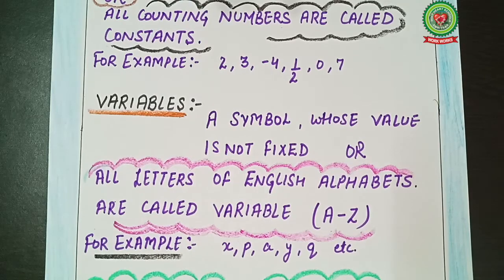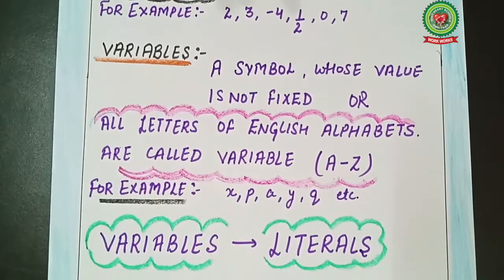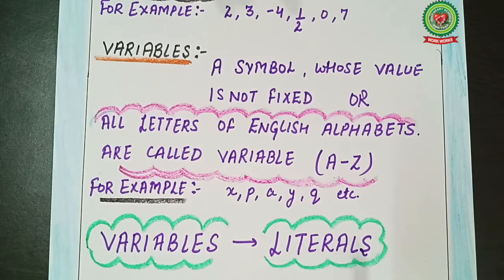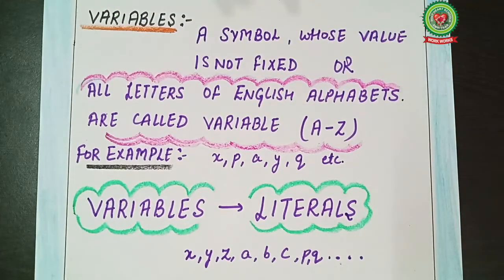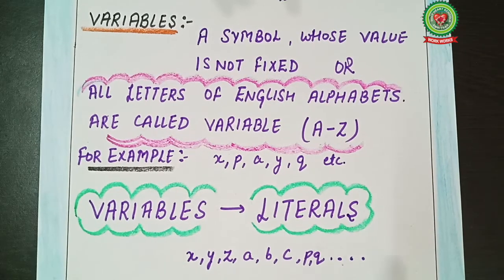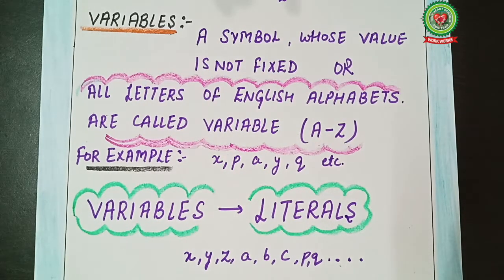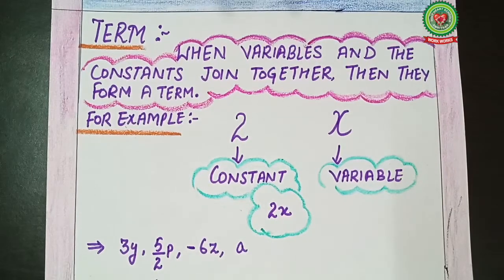Variables also have another name: literals — which you have learned in fifth as well as sixth standard. So we have two names: variable as well as literals. x, y, z, a, b, c, p, q, and so on — all these are called variables as well as literals.